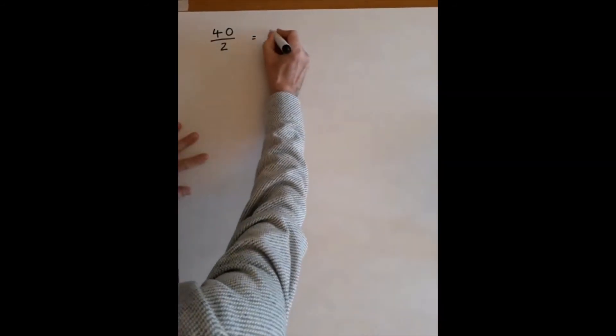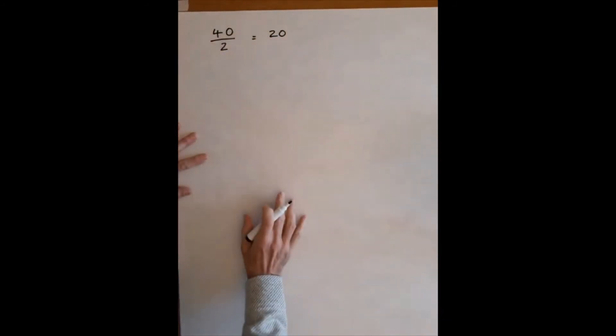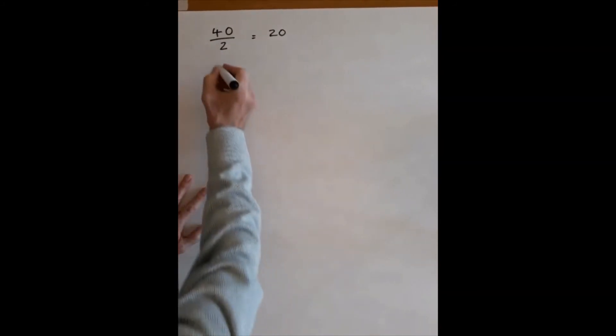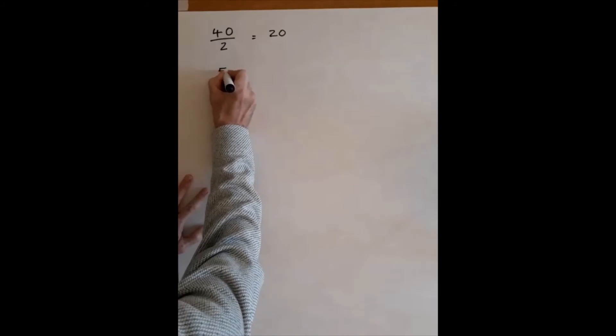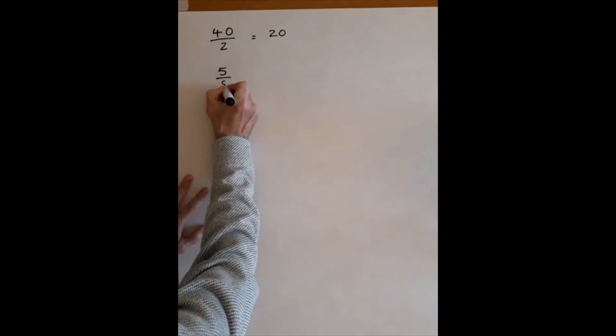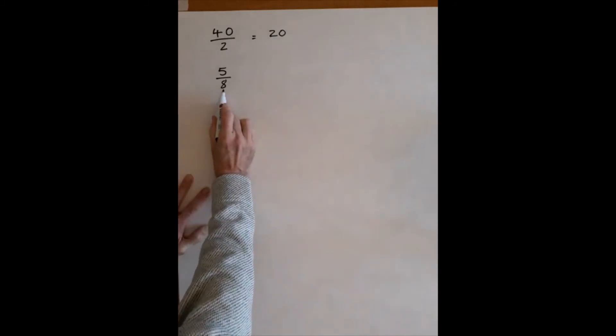What this is asking us is how many times does 2 go into 40. Well, we know the answer to that is 20, but that's not the point. If I gave you a fraction which was, say, 5/8, and I asked you to convert this into a decimal number, then we've got a little bit more work to do. It's not difficult, but we just need a little bit more work.